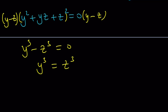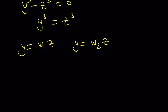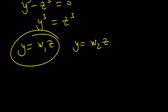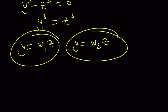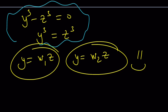And this gives you y equals w₁z or y equals w₂z, where w is a primitive cube root of unity. This brings us to the end of the video. Thank you for watching — I hope you enjoyed it. Please let me know; don't forget to comment, like, and subscribe. I'll see you next time in another video. Until then, be safe, take care, and bye-bye.